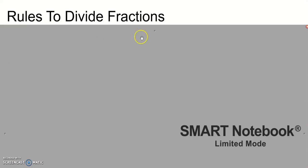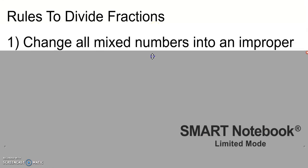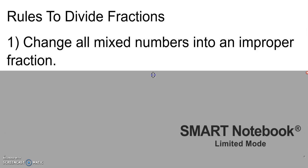Before we start, let's look over our rules. For dividing fractions, we have some basic rules. The first one is we need to change all mixed numbers into an improper fraction. This includes taking whole numbers and making them into a fraction by putting it over one. So a whole number eight would be eight over one, and whole number 19 would be 19 over one, and so forth.